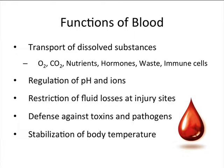Blood also regulates pH — it acts as a buffer, regulating the pH of the body and various ions. It prevents fluid loss through hemostasis: when you have an injury, components in the blood help prevent fluid loss. The white blood cells in the blood are your primary defense against various pathogens and some toxins. Because of the high heat capacity of water, blood also helps stabilize your body temperature — 40 liters of water acts as a significant heat sink to resist rapid changes in core temperature.